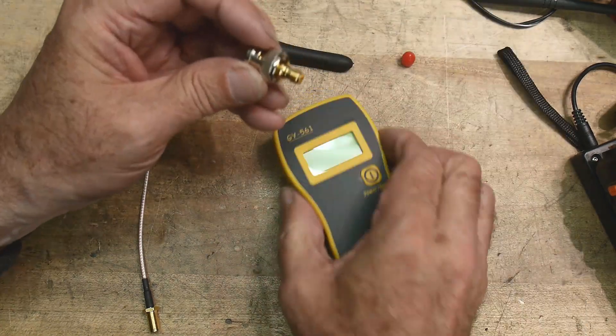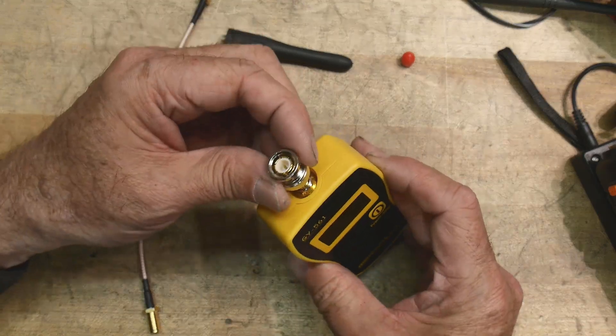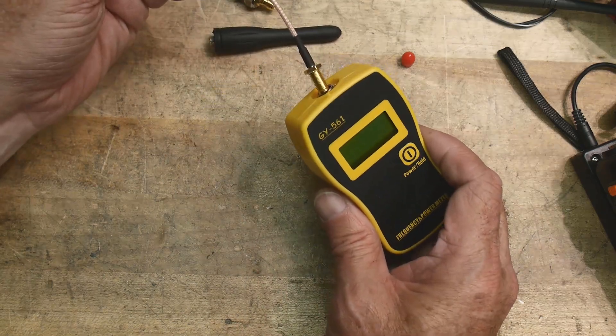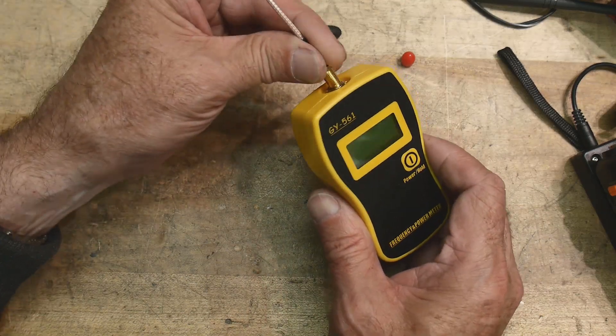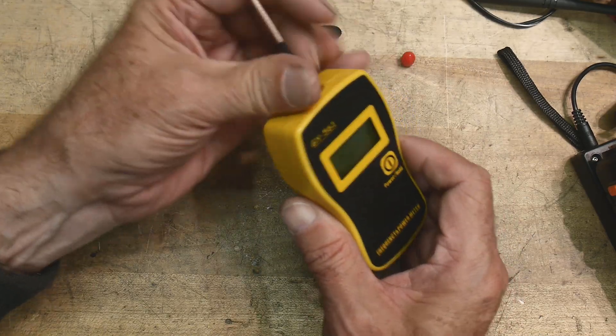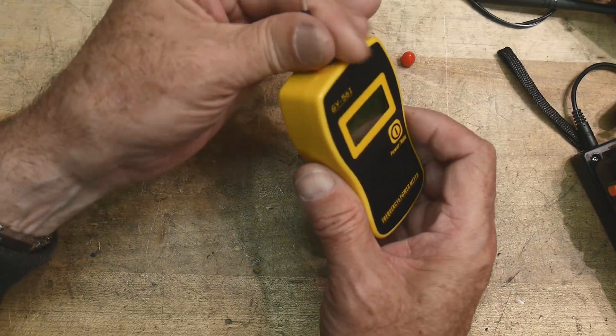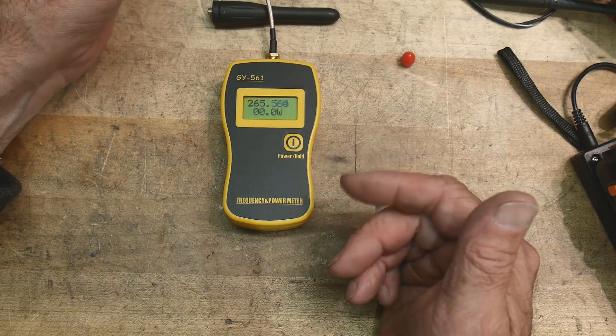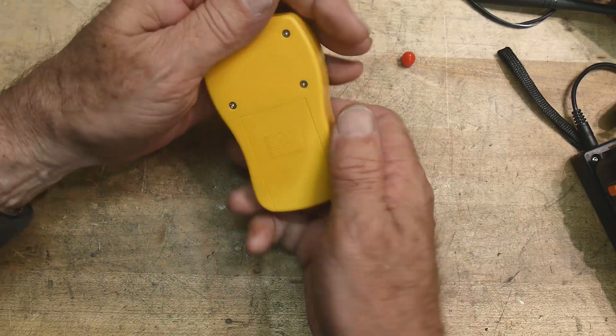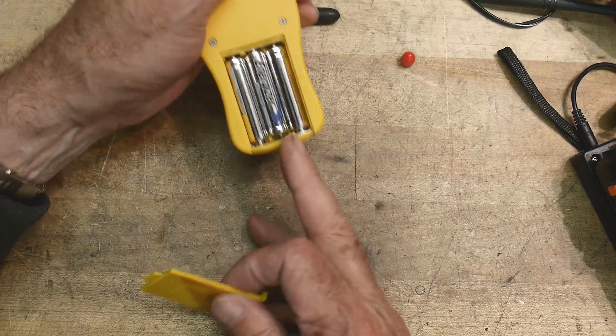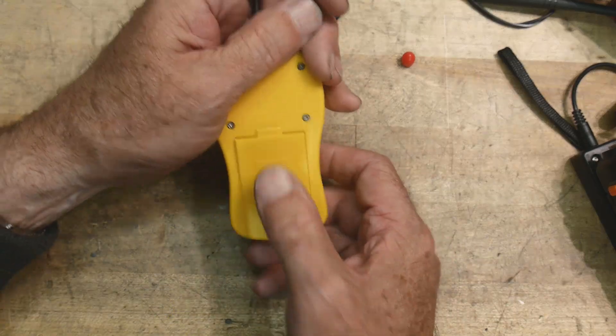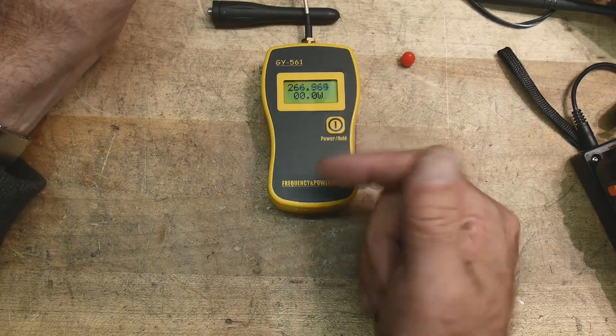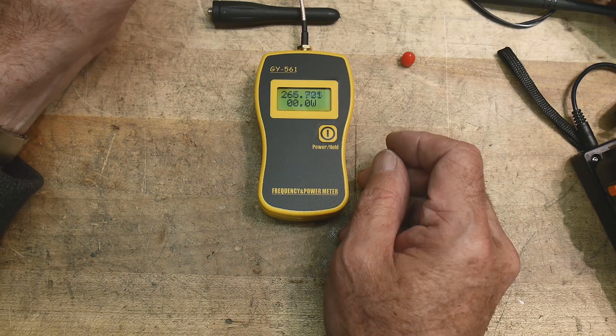It comes with this adapter that you can put on and then you have BNC. It also comes with a little cable that you can screw in. And then you can hook it up to other things and measure the power. So let's turn it on. It takes three AAA batteries. So it turns on and it's just kind of giving random numbers for frequency.